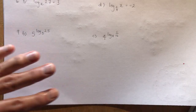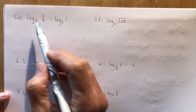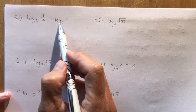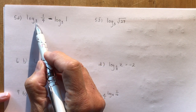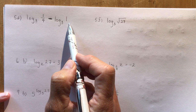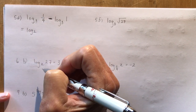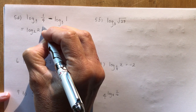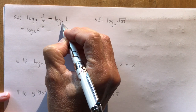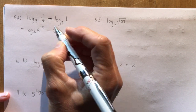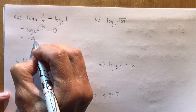Let's do six more questions. Log base 2 of 1/4 minus log base 3 of 1 — you can't subtract these because they have different bases, so evaluate them separately. For log base 2 of 1/4: 2 squared is 4, so 2 to the negative 2 is 1/4, giving an answer of negative 2. For log base 3 of 1: anything to the 0 is 1, so that's 0. The final answer is negative 2 minus 0, which equals negative 2.